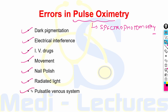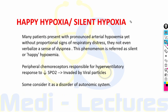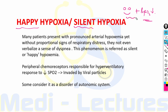In COVID there is something known as happy hypoxia, also known as silent hypoxia. The patient is sitting happily and the SpO2 reading is very low, yet there is no respiratory distress. Many patients present with pronounced arterial hypoxemia without any proportional signs of respiratory distress — this is known as silent hypoxia or happy hypoxia.